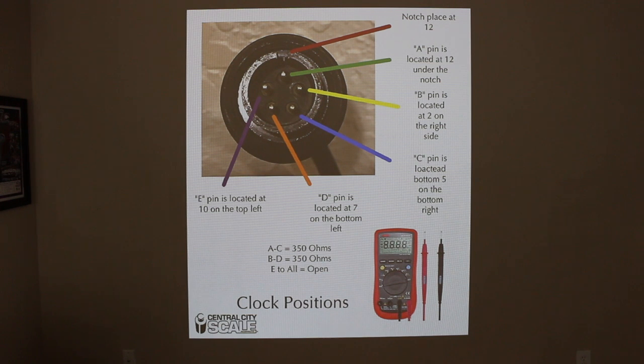Then the B pin is roughly at 2 o'clock, the C pin is at 5, then the D is at 7, and then the 10 o'clock pin is E. So E is at 10 o'clock.